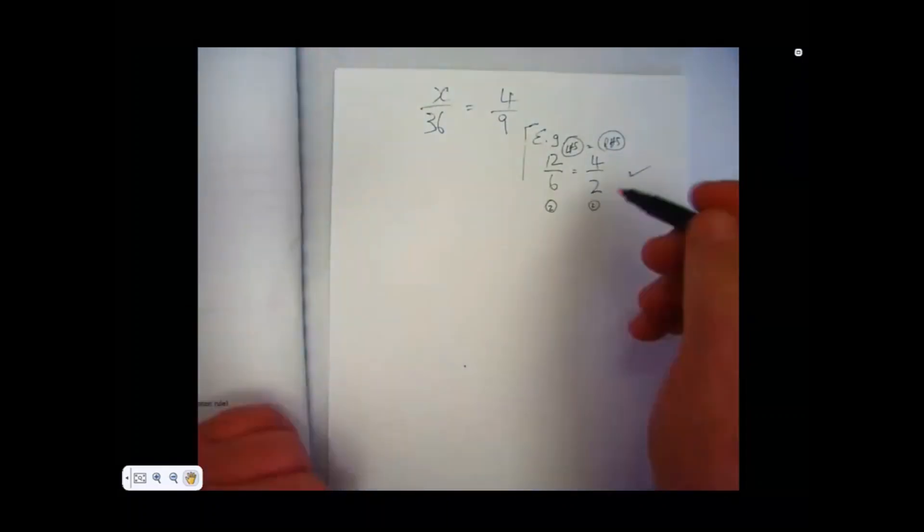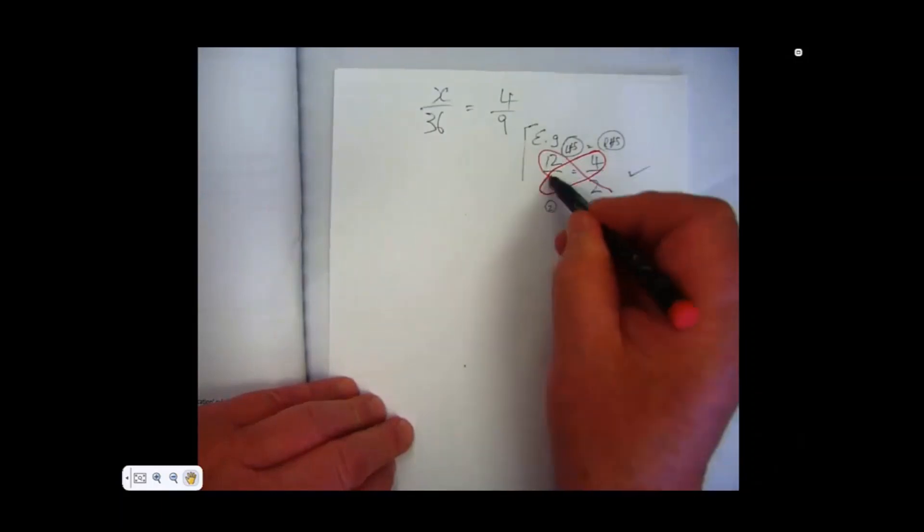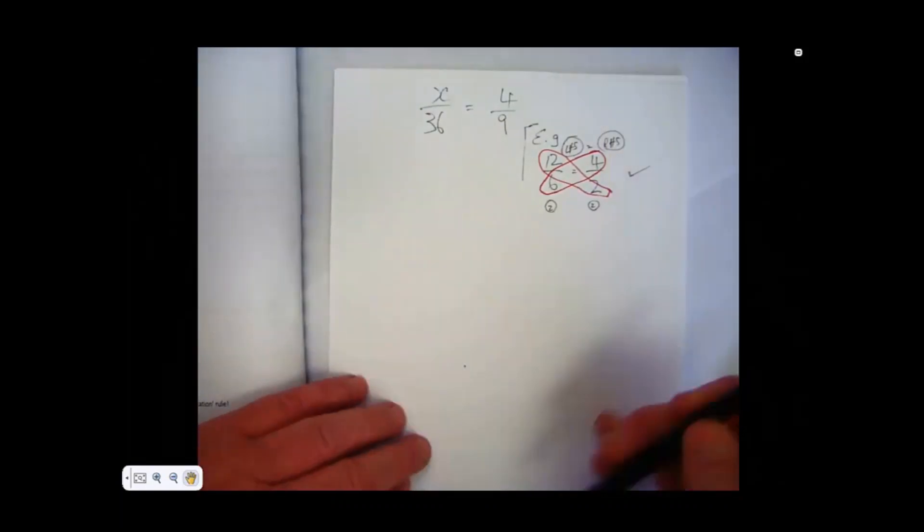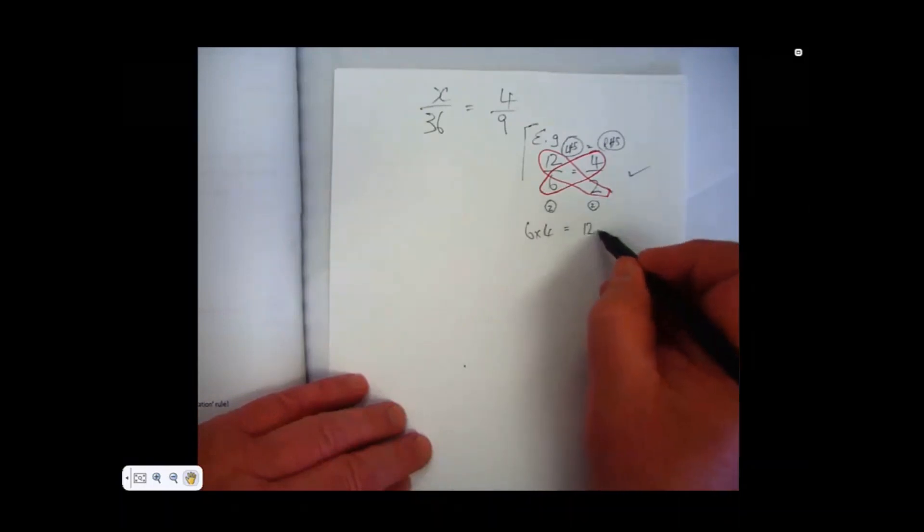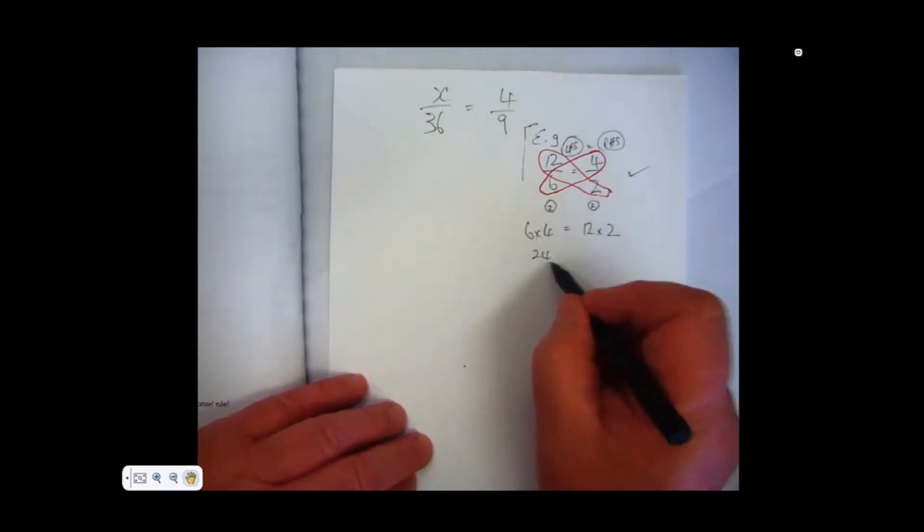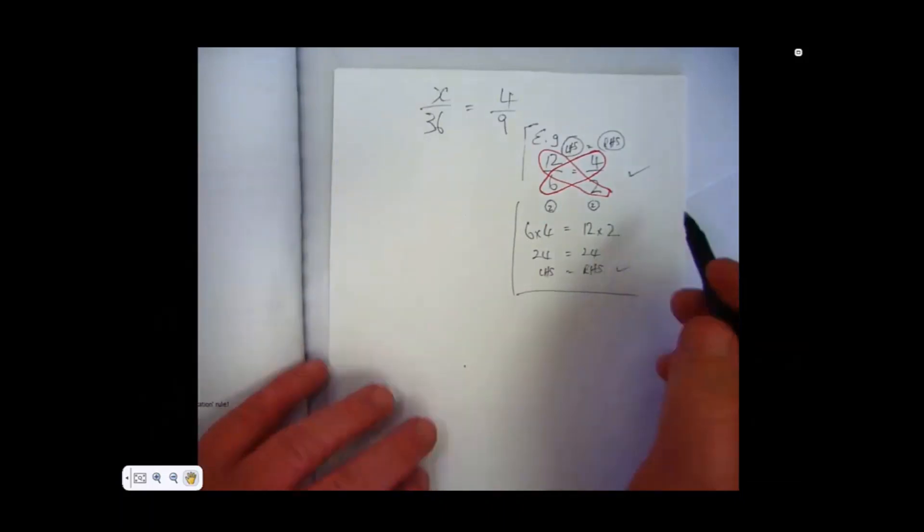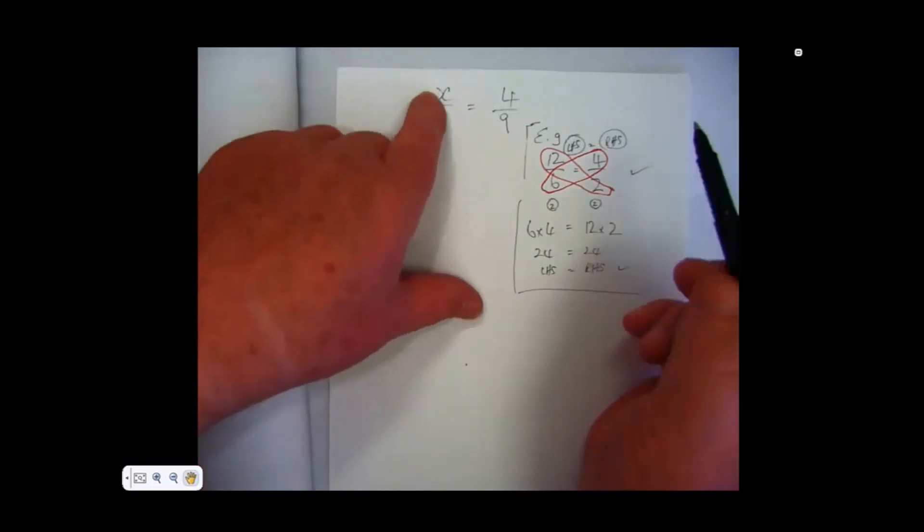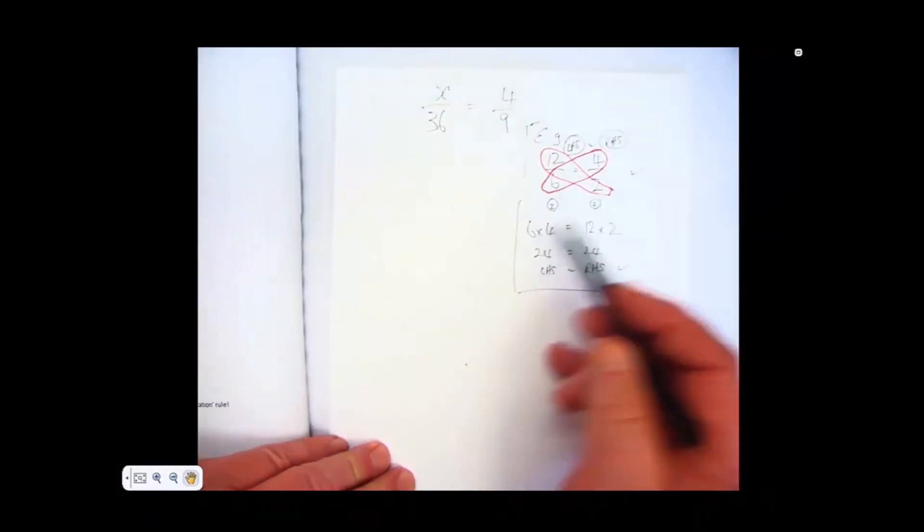Now, the cross multiplication rule says this. If I multiply these two together, and these two together, see, there's the cross. You multiply them together, and look what happens. 6 times 4 equals 12 times 2. 6, 4 is 24. 2, 12 is 24. So, left-hand side equals the right-hand side. That is true. So, if that's true, then whenever you're given an equation, and you're told that the left-hand side is equal to the right-hand side, you can then go straight into the cross multiplication rule.